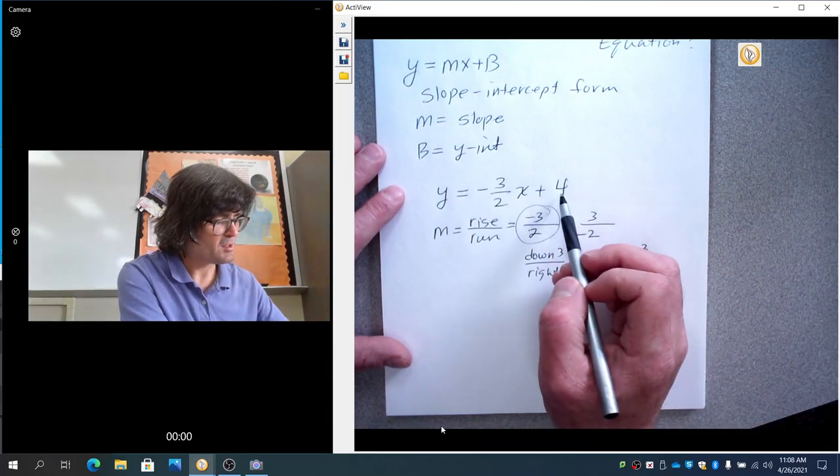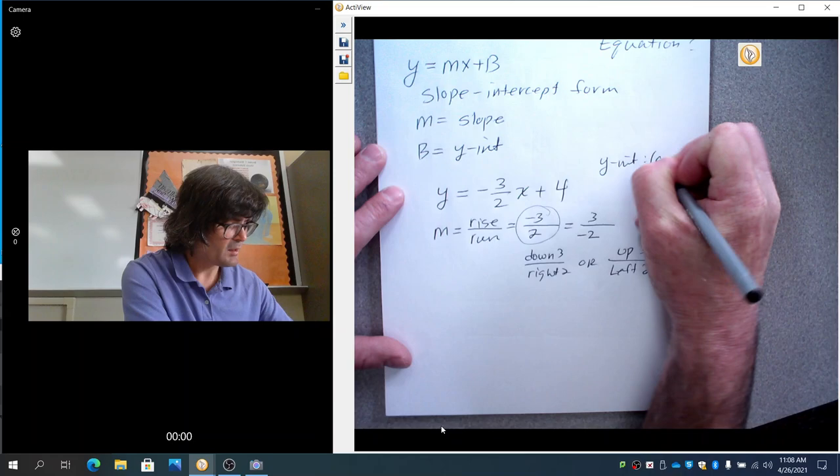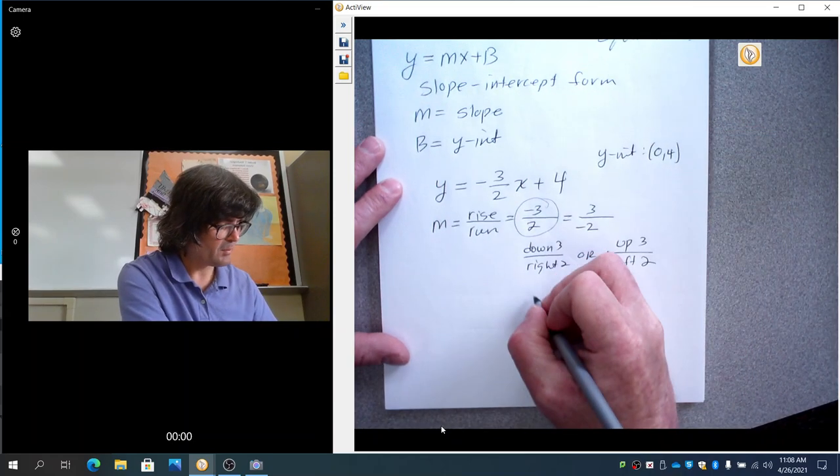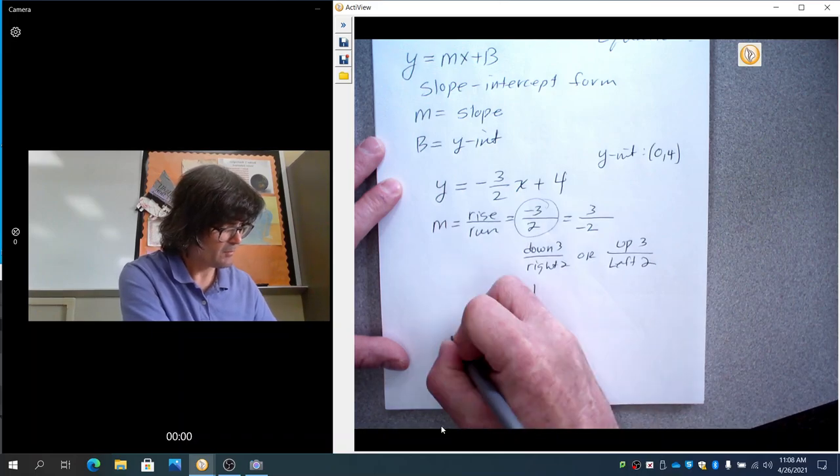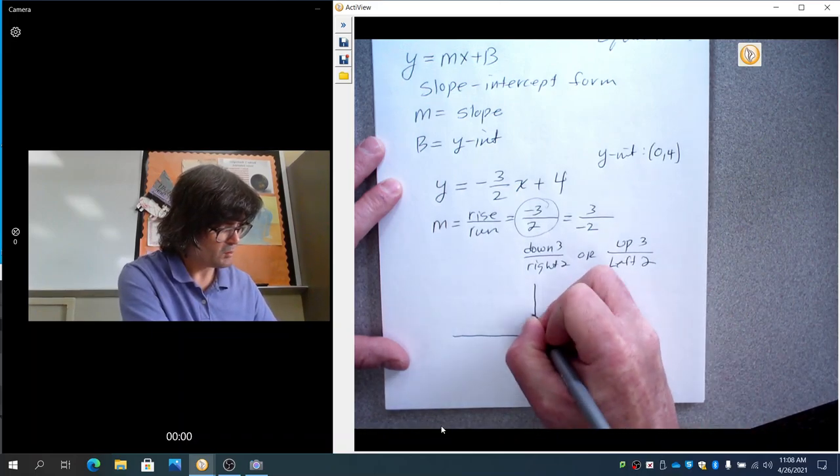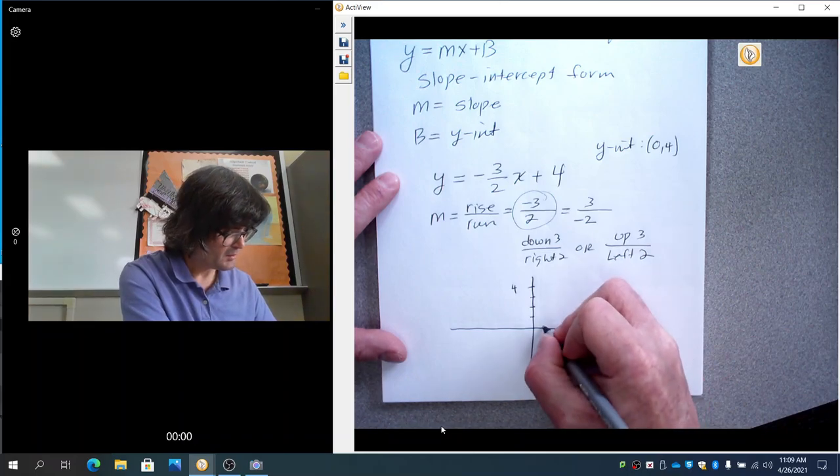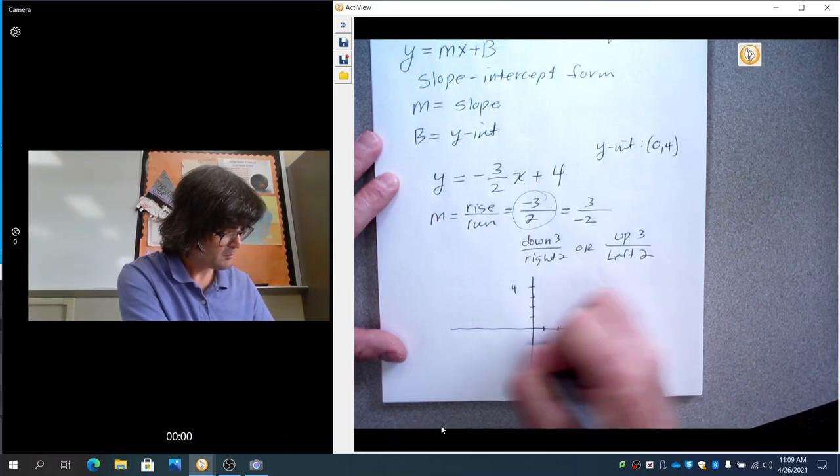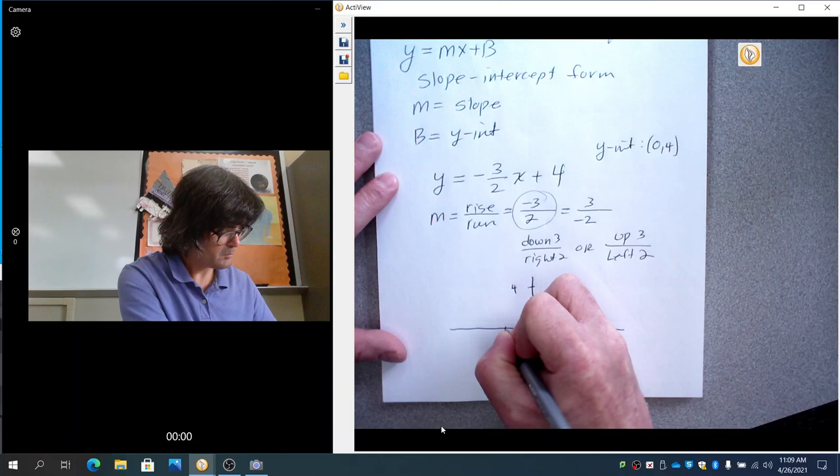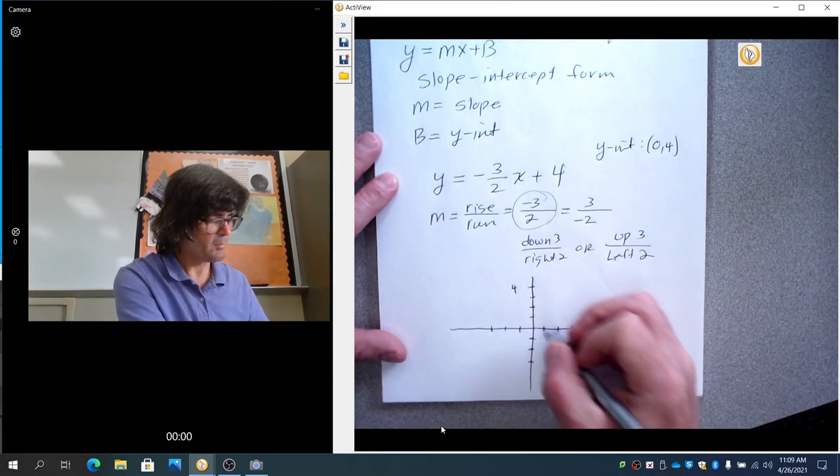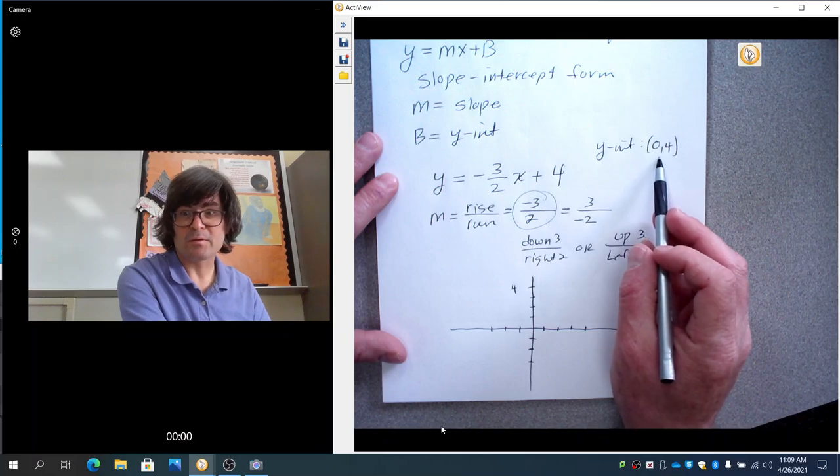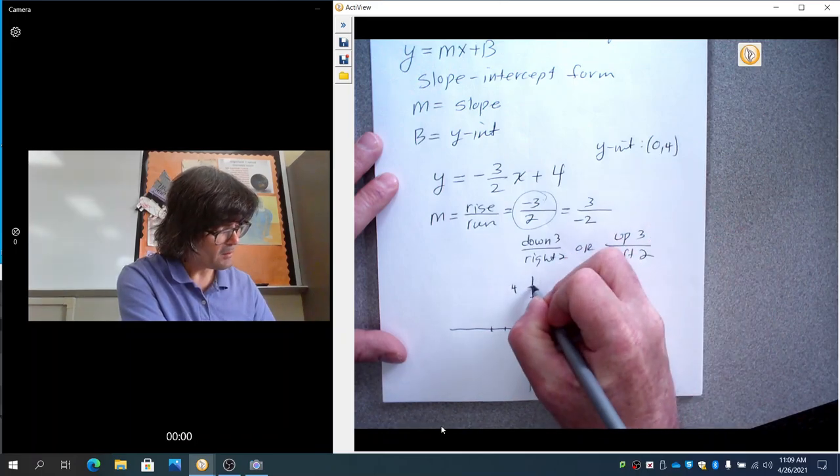And my y-intercept is the point 0, 4. And I'll draw that on a piece of graph here. We have 1, 2, 3, 4. Count out some more tick marks here. So, my first point is going to be the y-intercept, which is 0 and 4. That's right here.